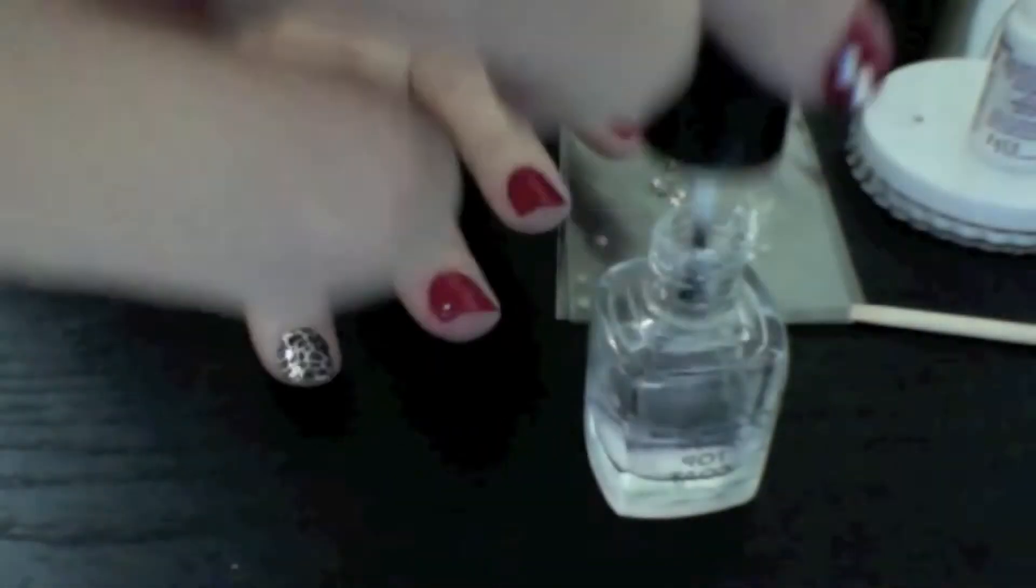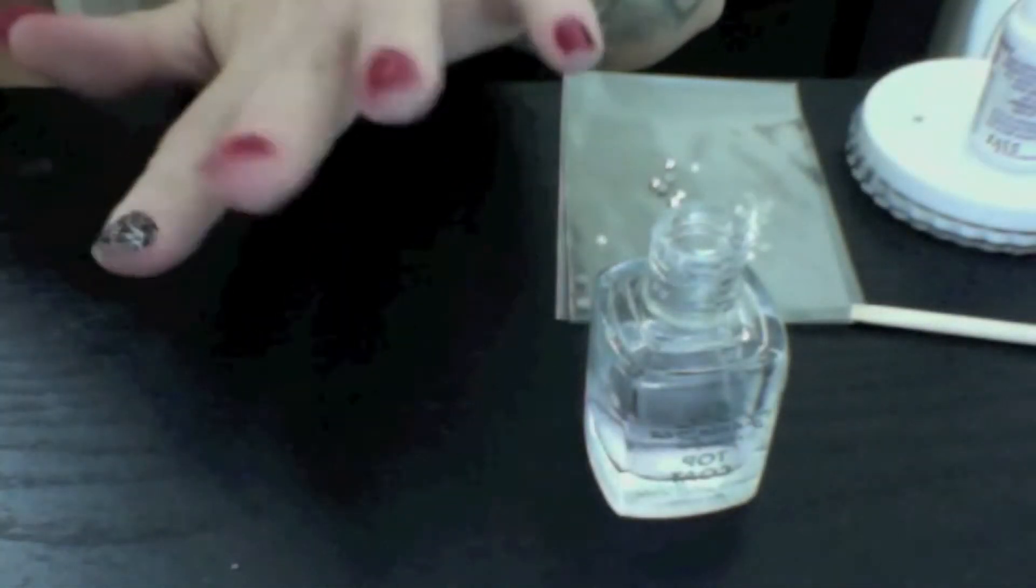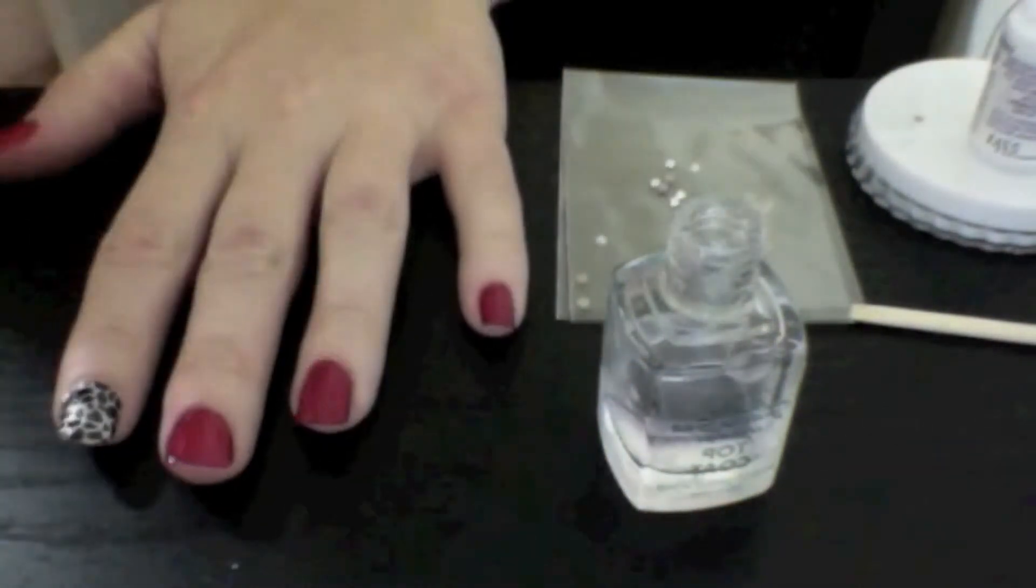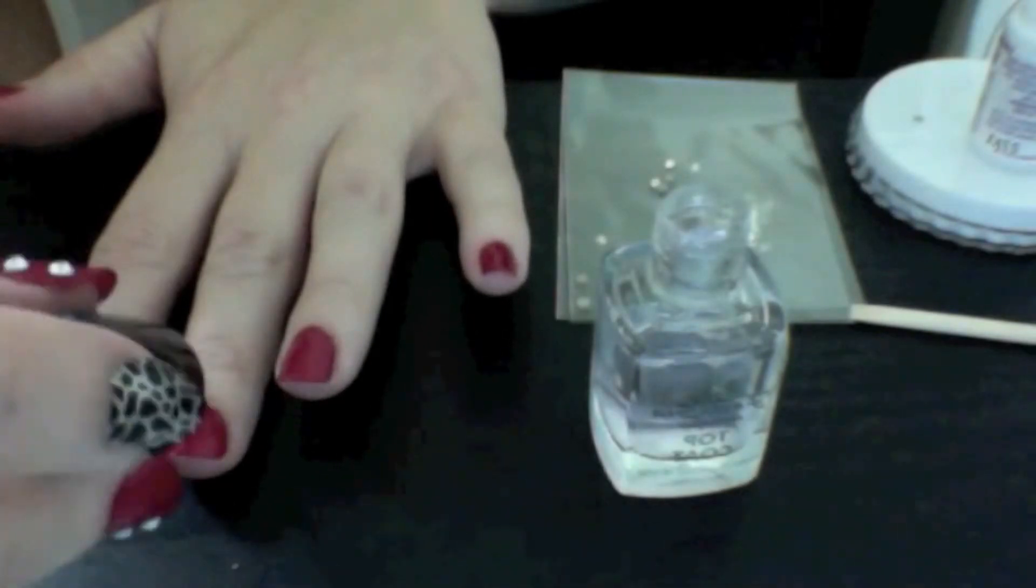Once you've done that, you're going to apply top coat to make sure that it lasts. And I apply top coat to all of the nails, of course. I don't want my nail polish to chip.